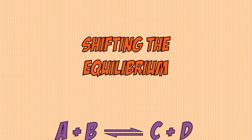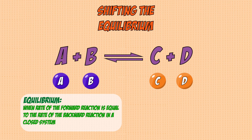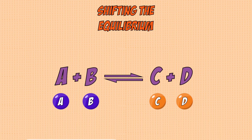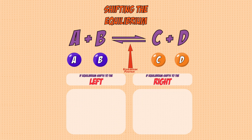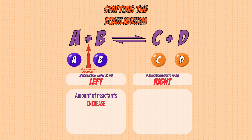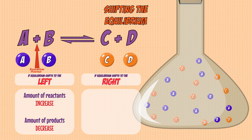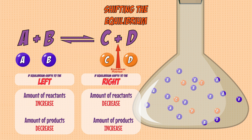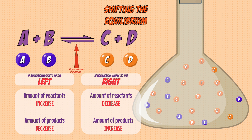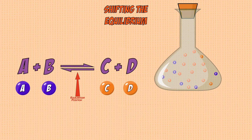Once a reversible reaction reaches equilibrium, it's possible to shift the position of equilibrium to alter concentrations of reactants and products. Shifting equilibrium to the left increases reactants and decreases products, while shifting it to the right increases products and decreases reactants. You can cause this shift by changing the conditions — for example, by changing the temperature of the mixture.